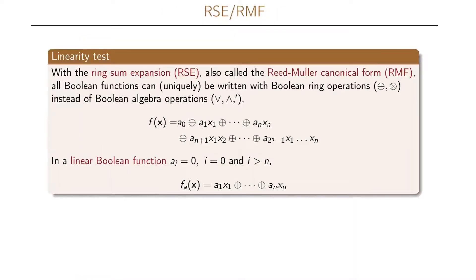This gives us a linearity test for our Boolean function. So we have previously seen the form that we called the ringsum expansion or the Reed-Muller canonical form, or what we also call the algebraic normal form. Writing our Boolean function in this form means that we write the Boolean function only with our ring operations, addition modulo 2 and multiplication modulo 2, instead of using our Boolean algebra operations that we call or, and, and not.